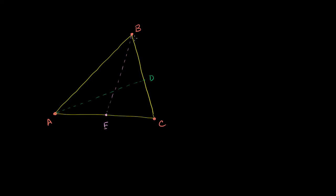So AD bisects angle BAC, and BE bisects angle ABC. The fact that this green line AD bisects angle BAC tells us that the two half-angles must be equal to each other. And the fact that BE bisects angle ABC tells us that the measure of angle ABE must be equal to the measure of angle EBC. Now we see they have intersected at a point inside the triangle. Let's call that point I.